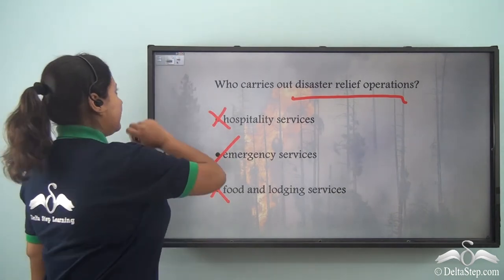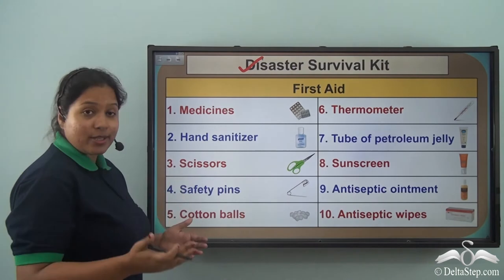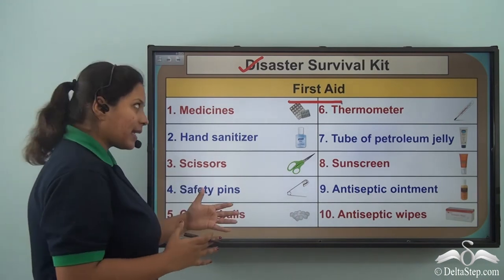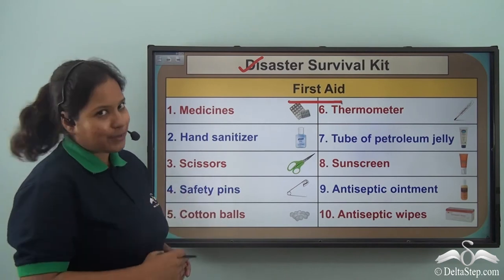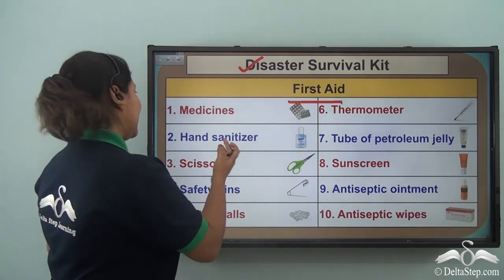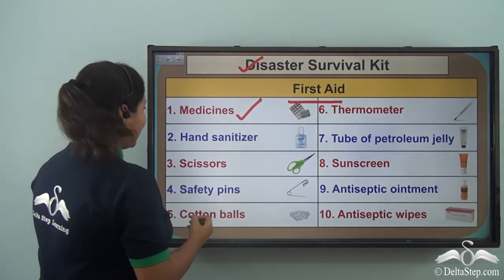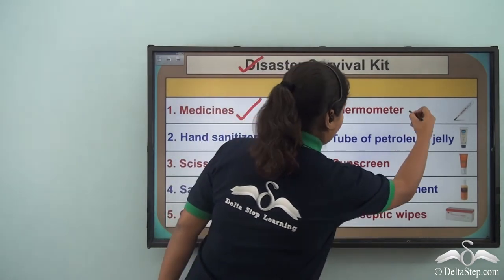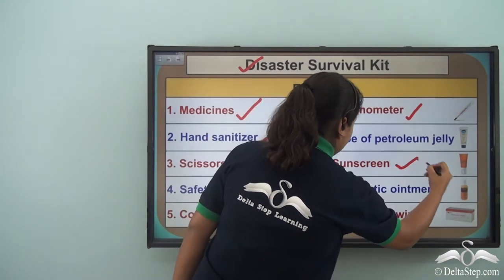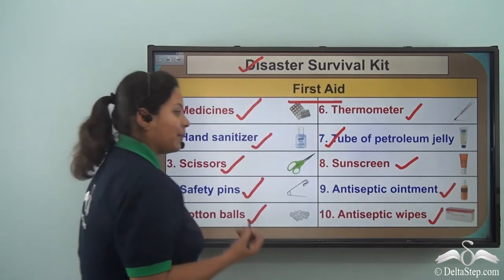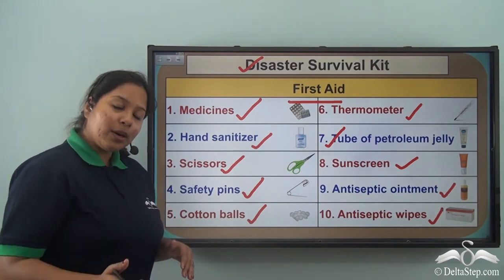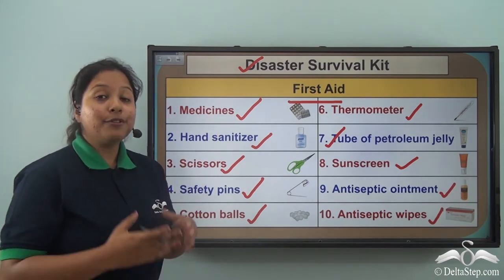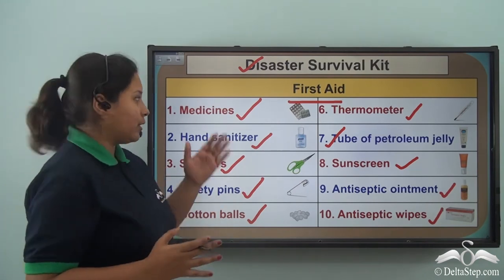Now let's see what are the kits. The first kit is the disaster survival kit — it is called the first aid kit, used for immediate help in emergency situations. The things you need in it are: medicines, hand sanitizer, scissors, safety pins, cotton balls, thermometer, tube of petroleum jelly, sunscreen, antiseptic ointment, and antiseptic wipes. In case of any injury, these things will help you get immediate help, so you need to have a first aid kit ready for these kinds of situations.